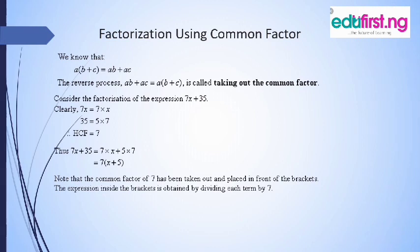Let's consider an example: 7x plus 35. 7x is the same as 7 times x. 35 we can break down into 5 multiplied by 7. So 7 is common on either side of the expression. So 7 is common here and common here. So factorize out with 7. That's why we have 7 in the bracket x plus 5.